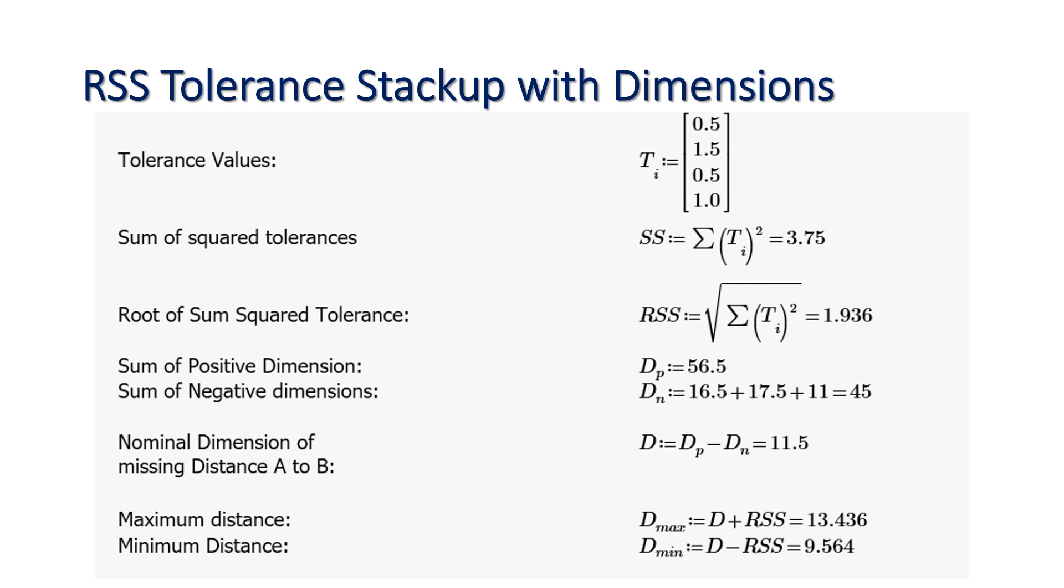The nominal dimension of the missing distance from A to B is nothing but the positive dimension minus the sum of the negative dimensions, that is equal to 11.5. Now the RSS method plays a role in deciding the maximum distance.